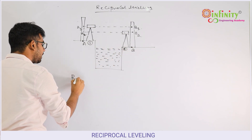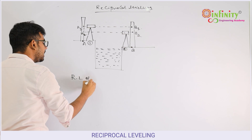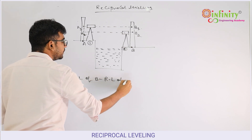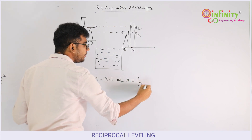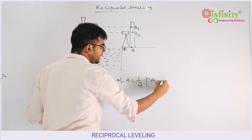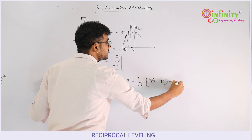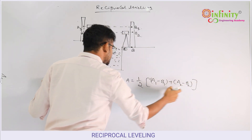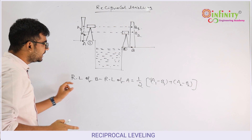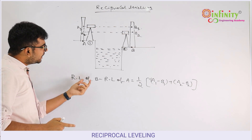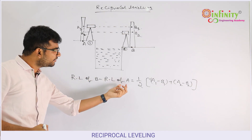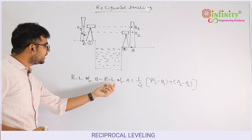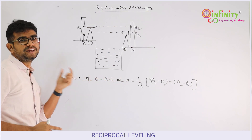The formula is: RL of B minus RL of A = half into (A1 minus B1 + A2 minus B2). Using this formula, you can determine the RL of B if RL of A is given, or determine the RL of A if RL of B is given.